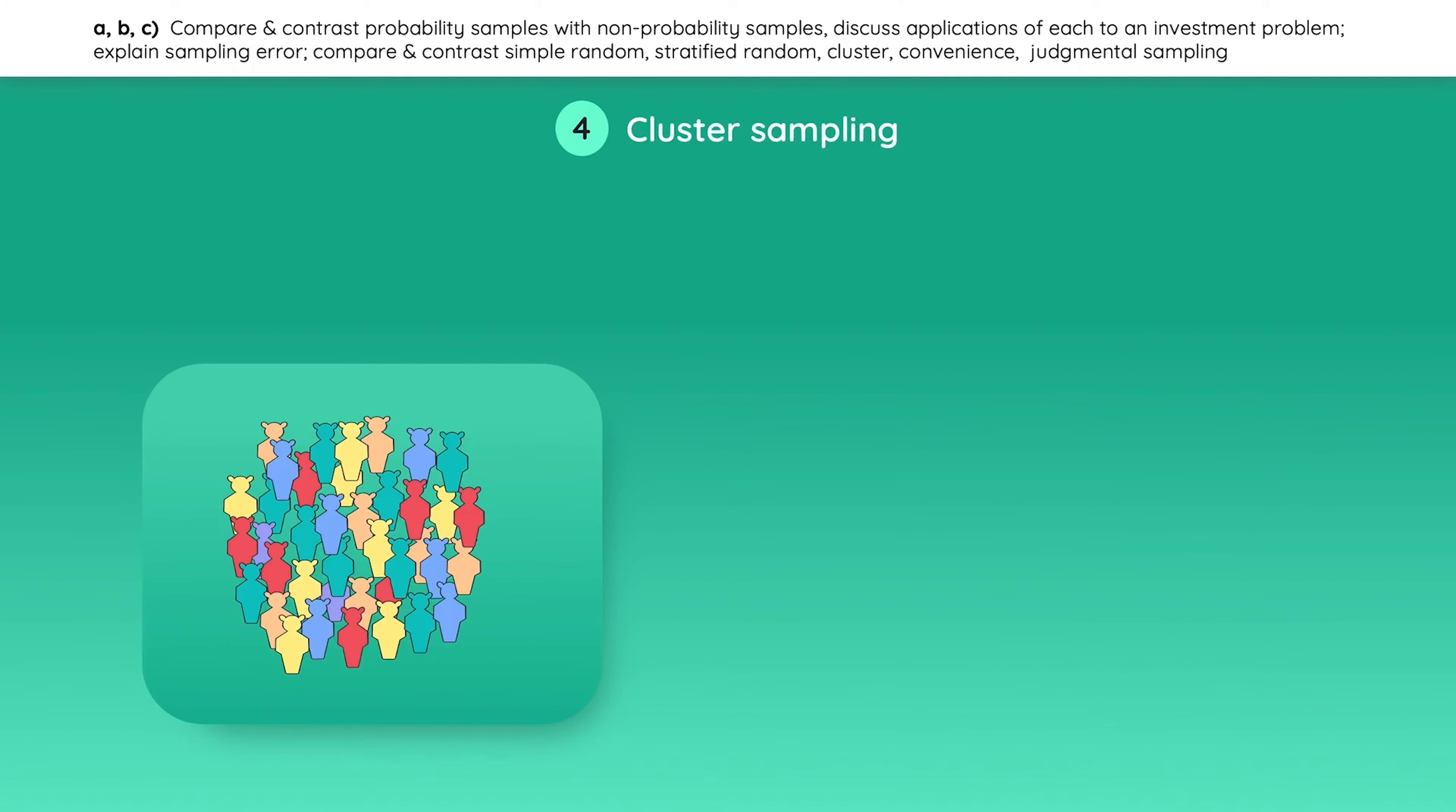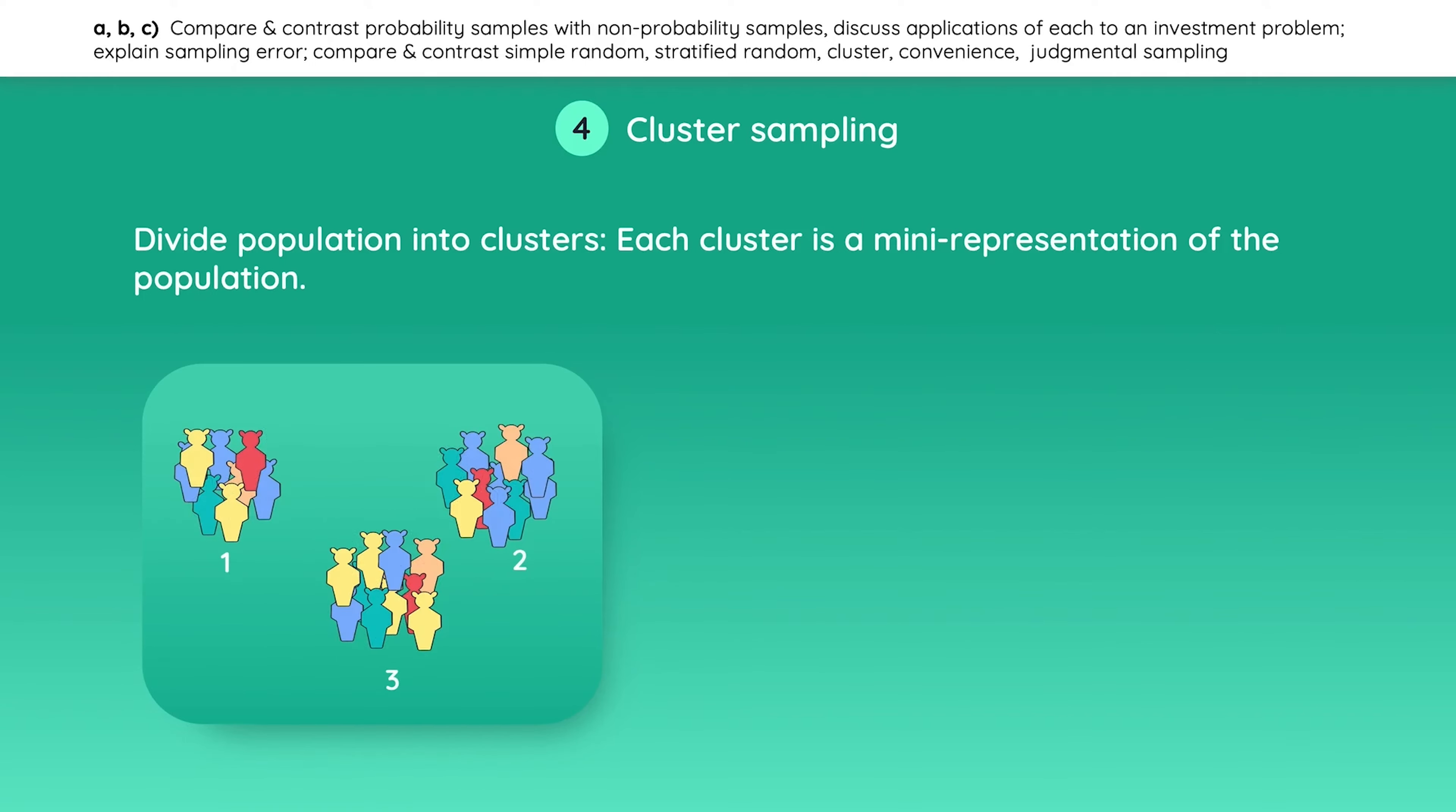With cluster sampling, you divide the population into clusters where each cluster is a mini-representation of the population. So let's create some clusters. One-stage cluster sampling is when an entire cluster is randomly selected to become the sample. Two-stage cluster sampling is when a cluster is randomly selected, but only a few observations from the cluster are randomly drawn for the sample.